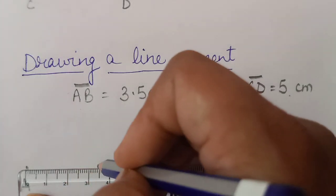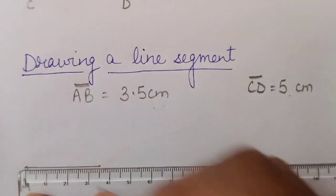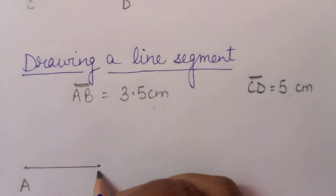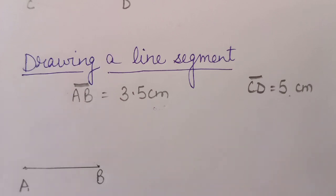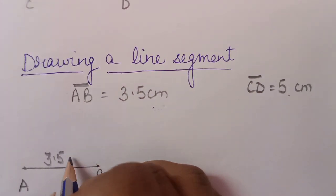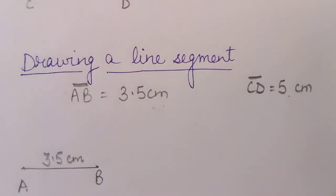So here we will make a line and this point will be known as point B. So this is line segment AB which is of 3.5 centimetre. Clear?